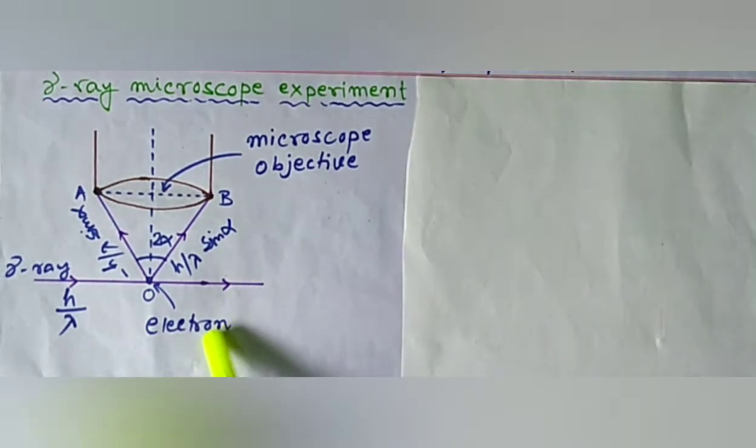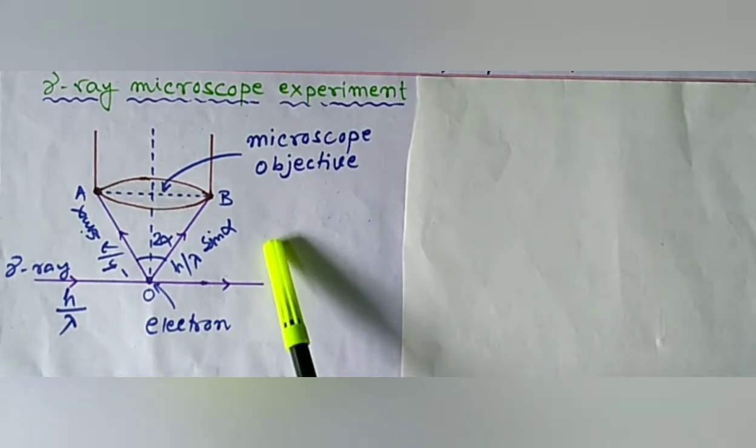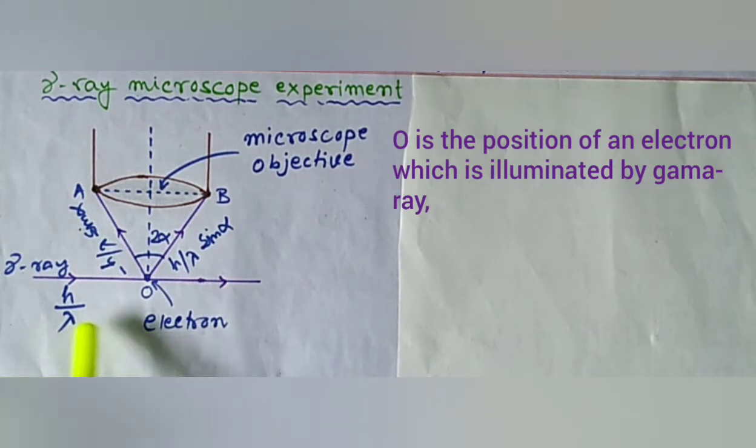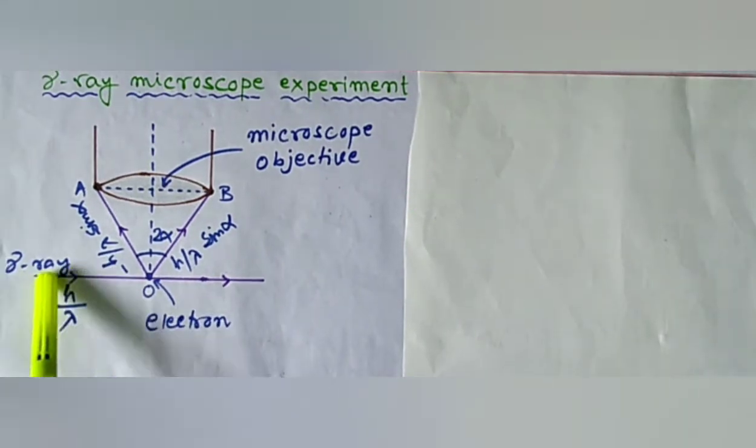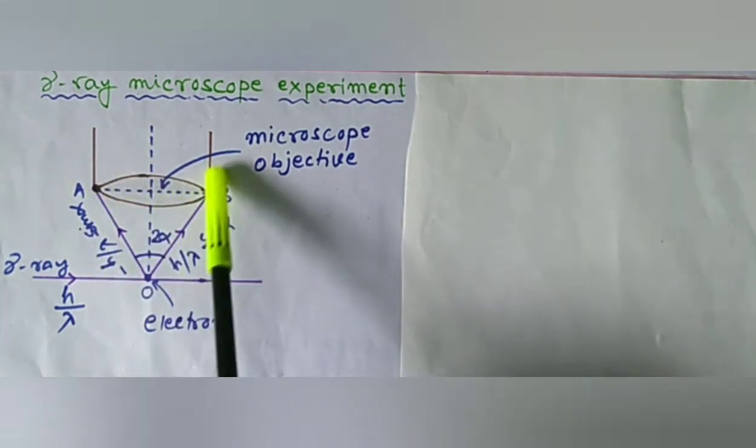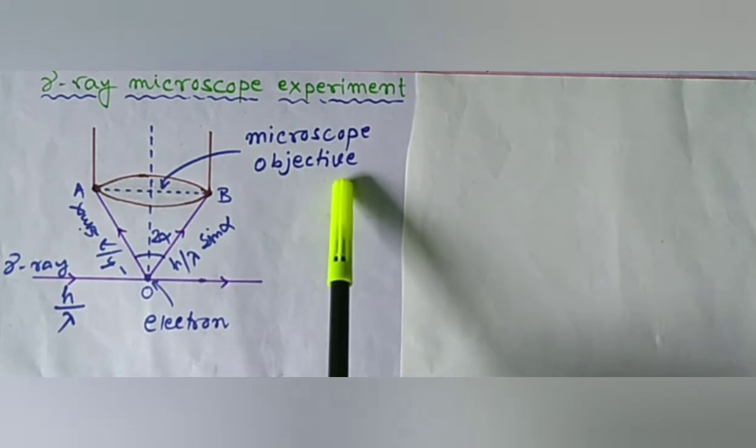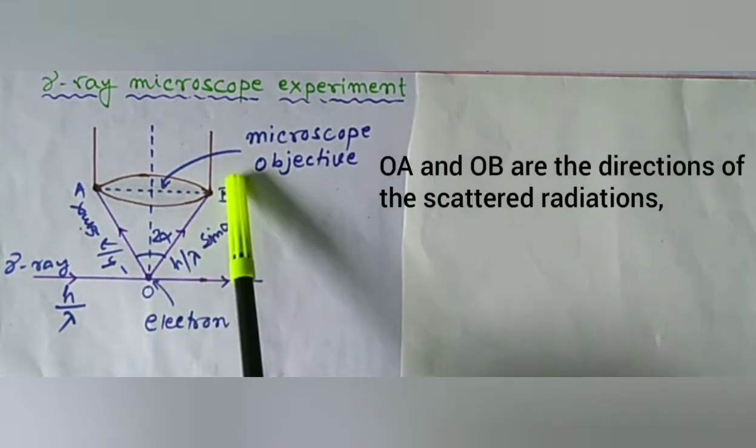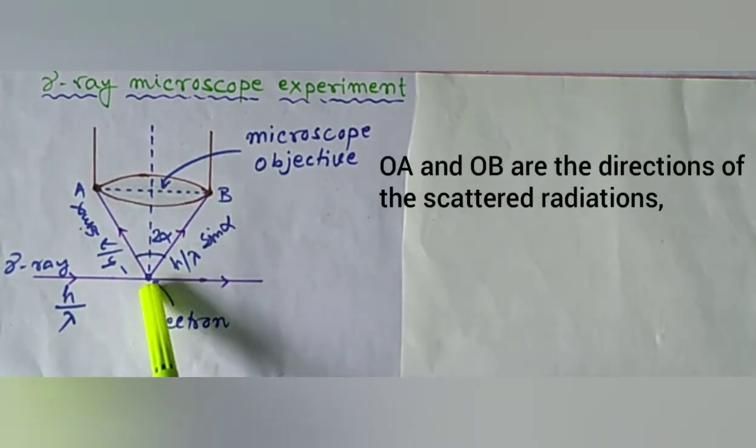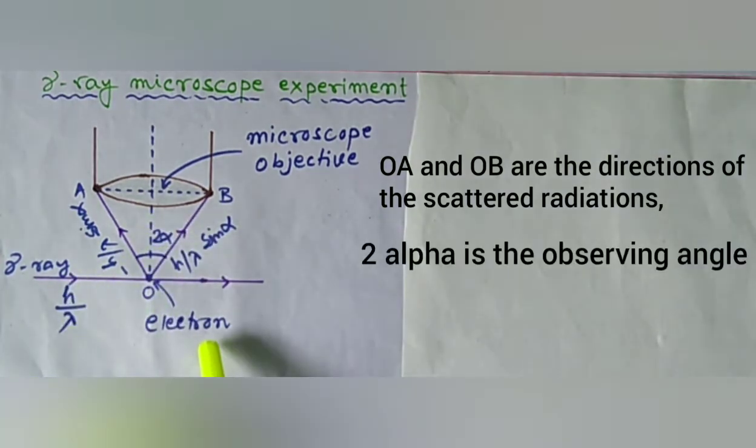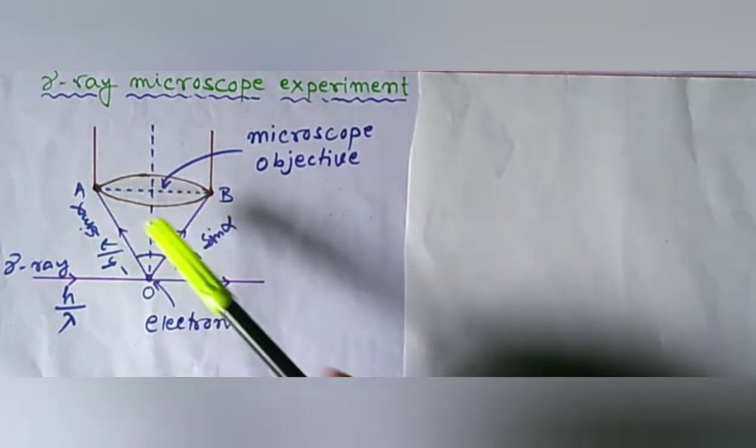This is the experimental setup of this hypothetical experiment. In this setup, this is an electron which is illuminated by gamma ray of momentum of the order of h by lambda. This is a microscope and this portion is the microscope objective. O-A and O-B are the directions of the scattered radiations. 2-alpha is the observing angle of these scattered radiations.